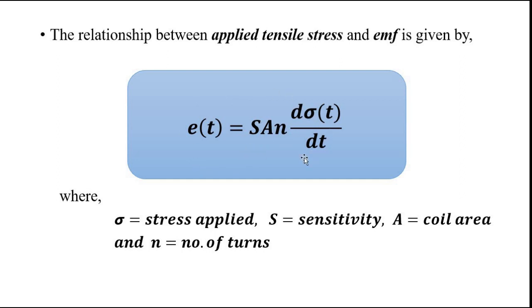The expression for the induced EMF is: EMF = S · A · n · dσ/dt, where S is the sensitivity of the sensor, σ is the stress or pressure applied, A is the coil area, and n is the number of turns.